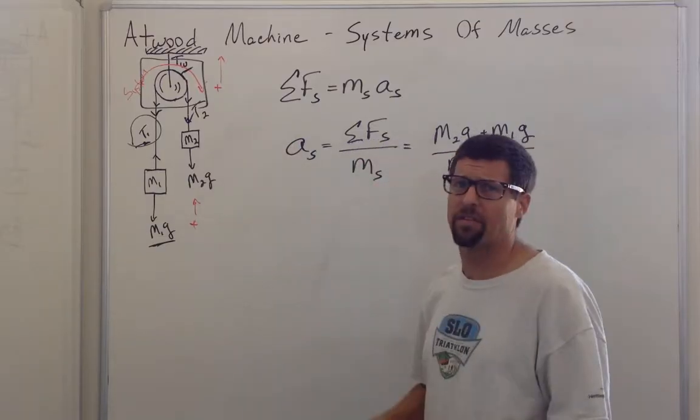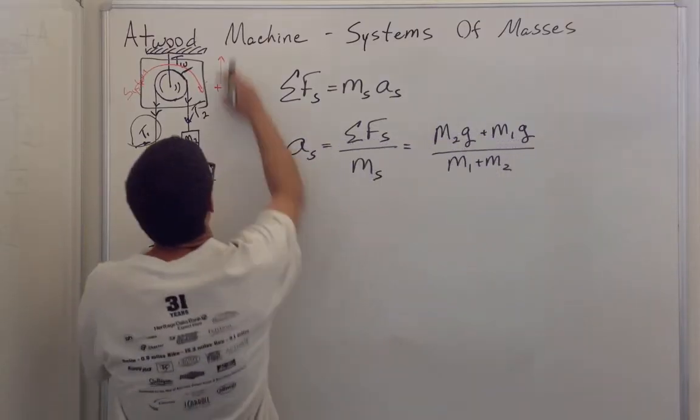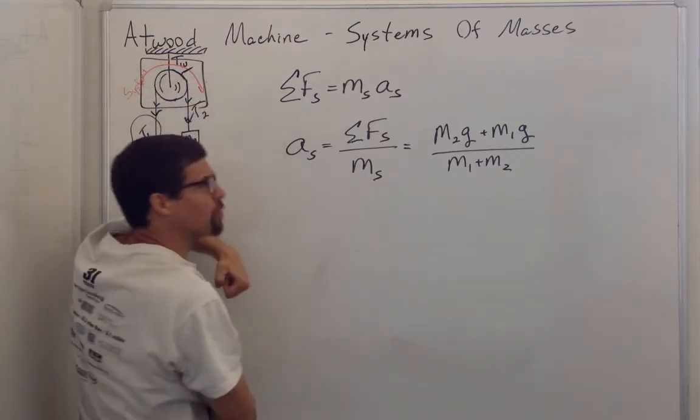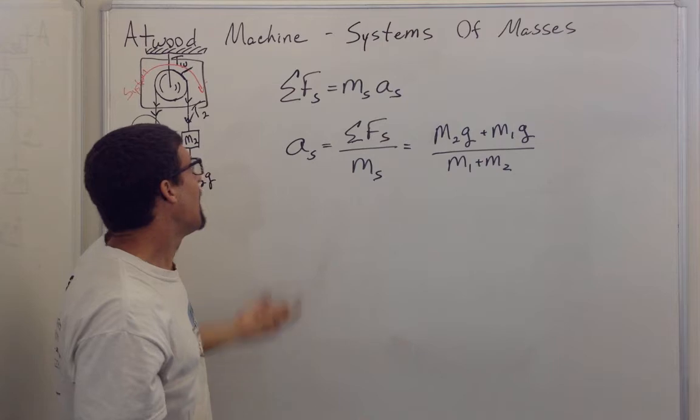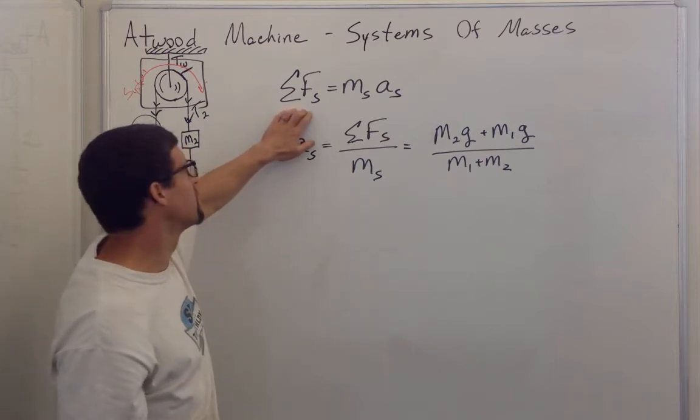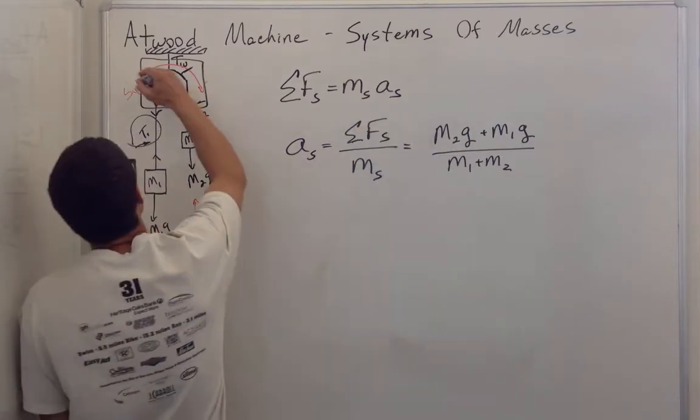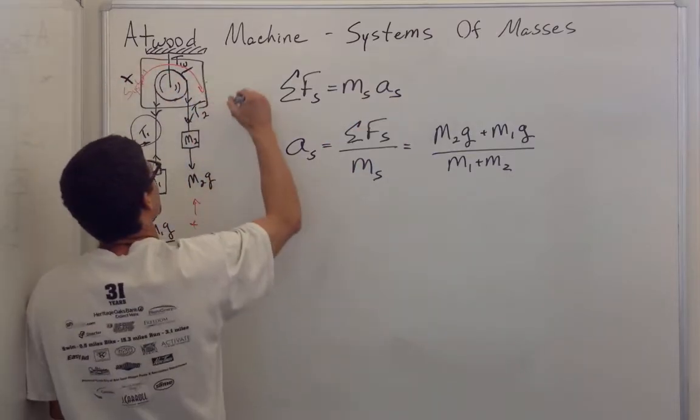But I'm going to show you how to solve this as a system. Rather than say up or down is positive, we're going to say this is the forward direction of the system. And then we just say the sum of the forces on the system is equal to the mass of the system times the acceleration of the system. I define this as the positive direction of the system.